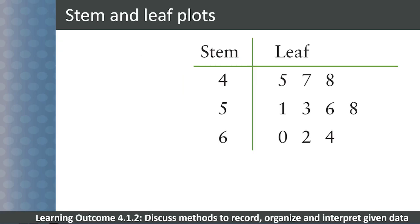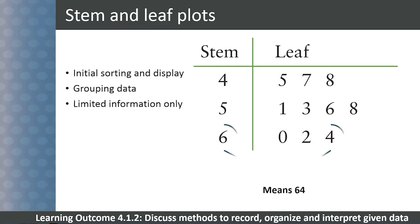Stem and leaf diagrams are useful for initial sorting and display of data, and they are a method of grouping data. It can only show limited information. Remember that a 6 on the stem and a leaf of 4 would represent 64.